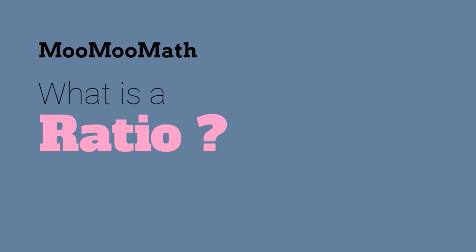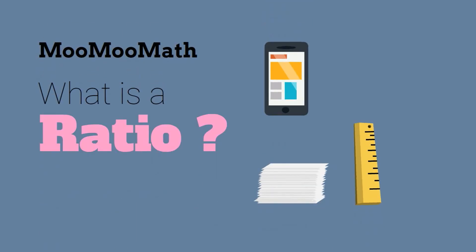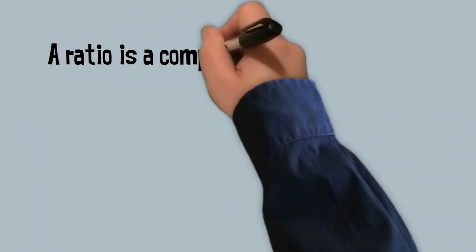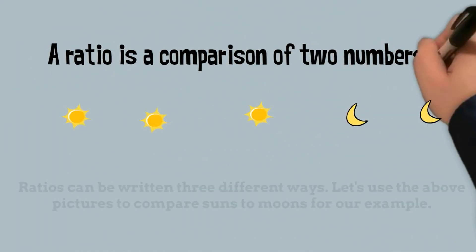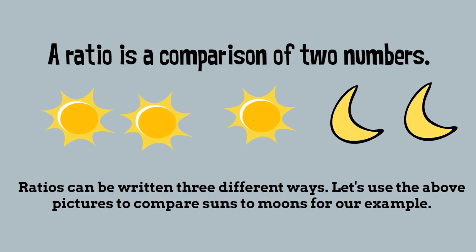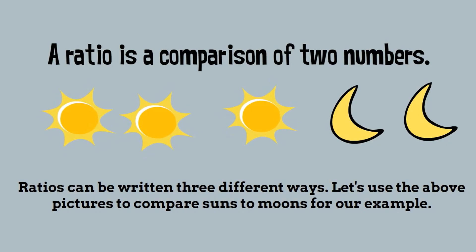Welcome to MooMooMath. What is a ratio? A ratio is a comparison of two numbers. Ratios can be written three different ways.